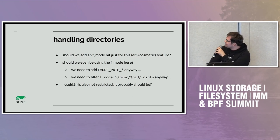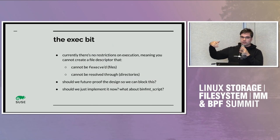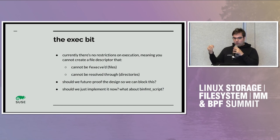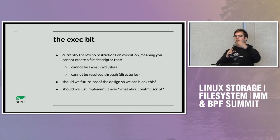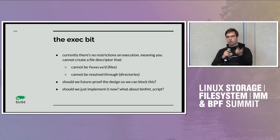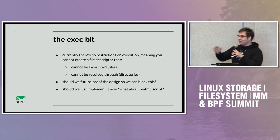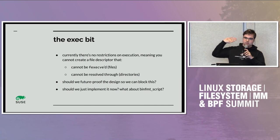The short version: at the moment, there is no way to have a file handle that a process cannot fexec. If you have a handle to, say, a setuid binary, and you hand this handle to someone you don't trust, they could exec it. There's also no way to restrict resolution through directories on a file handle basis. I'm not saying we should implement it now, but the design should have this in mind so that if we add it in the future, the magic link changes wouldn't need to be rethought.